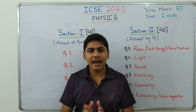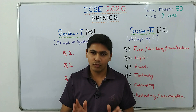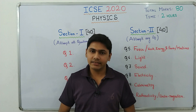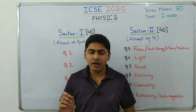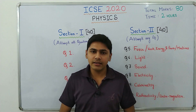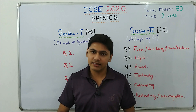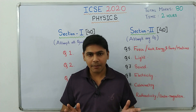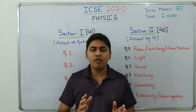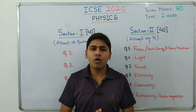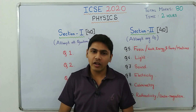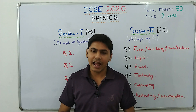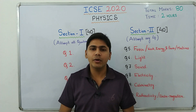Read everything thoroughly and try to understand each and everything explained. The next important thing is numericals — all numericals are very important in physics. If you follow the concise book, there are many good numericals in the examples and the question-and-answer section. Solve all the numericals from both the examples and the exercises properly, and you won't face any problems solving numericals in your examination.